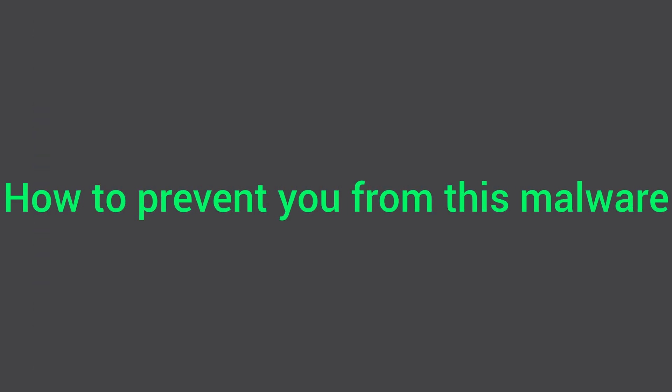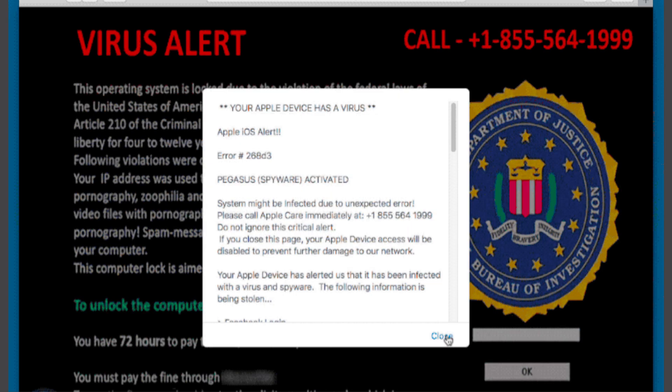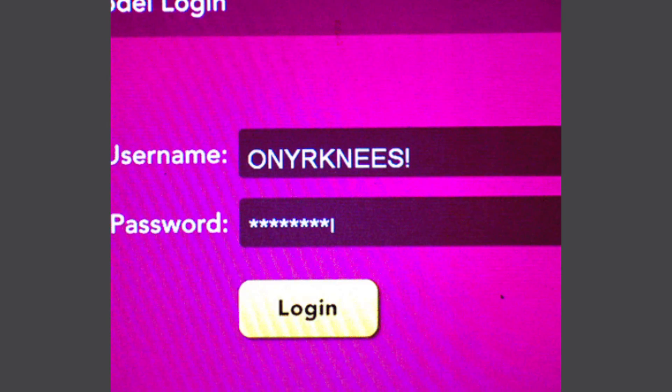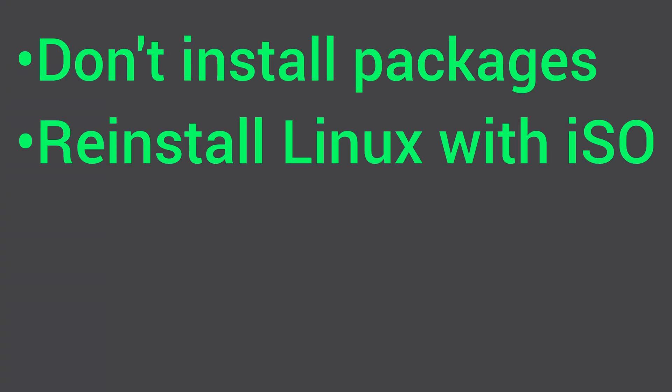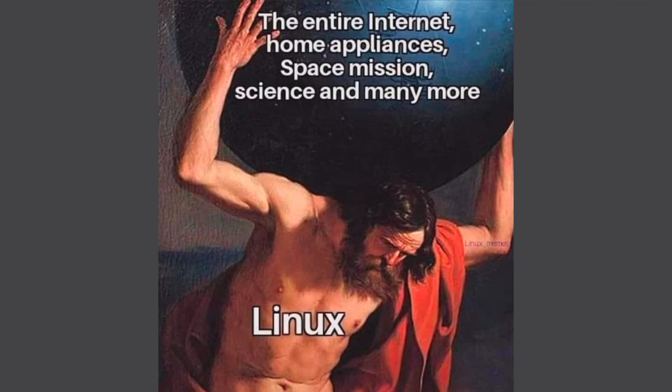Step 6: What if you're infected? If you confirm malware on your system, here's what to do: disconnect your computer from the internet immediately, back up your personal files but not your installed packages, reinstall Linux using a fresh ISO, restore your files from backup after scanning them separately, and never install the same suspicious packages again. Linux is powerful, but with great power comes great responsibility. Just because it's secure doesn't mean it's bulletproof — be a smart user and your system will stay safe.